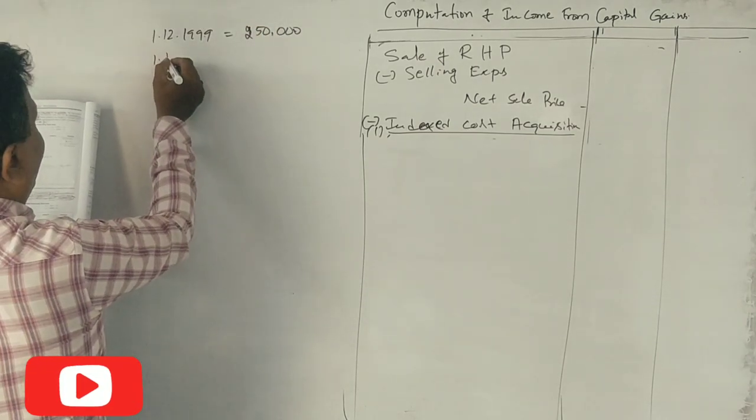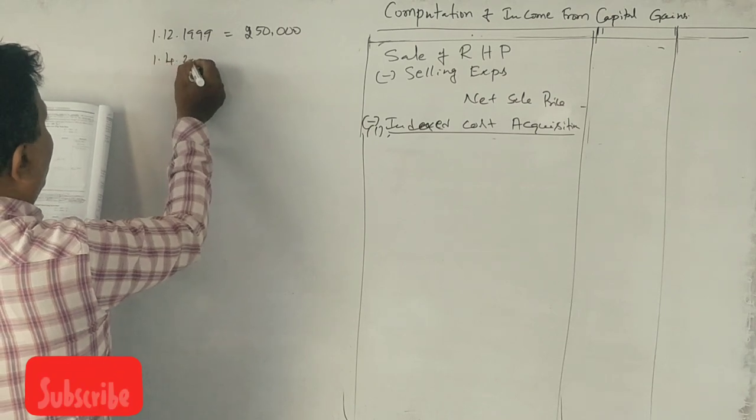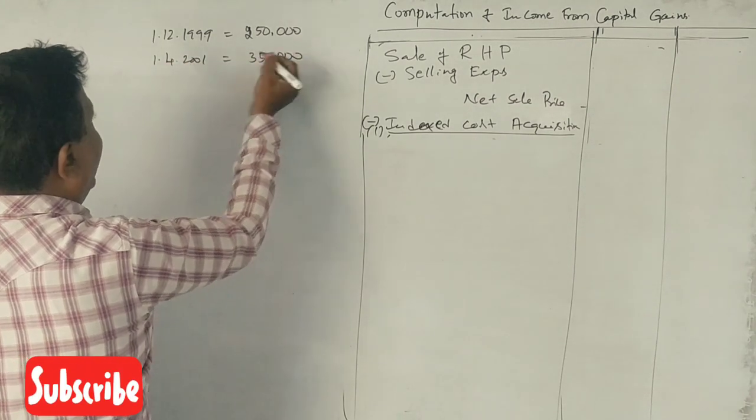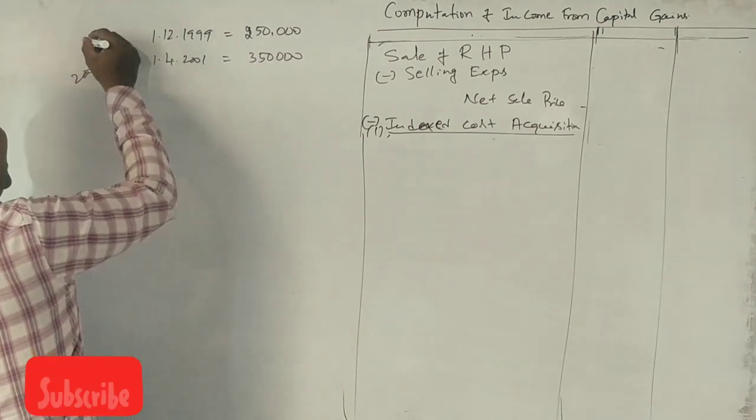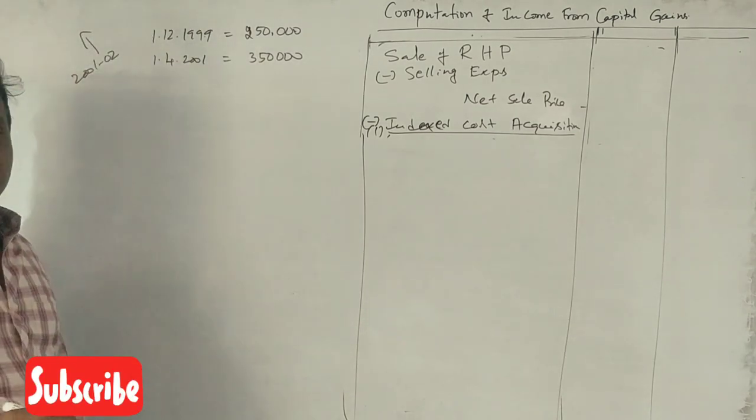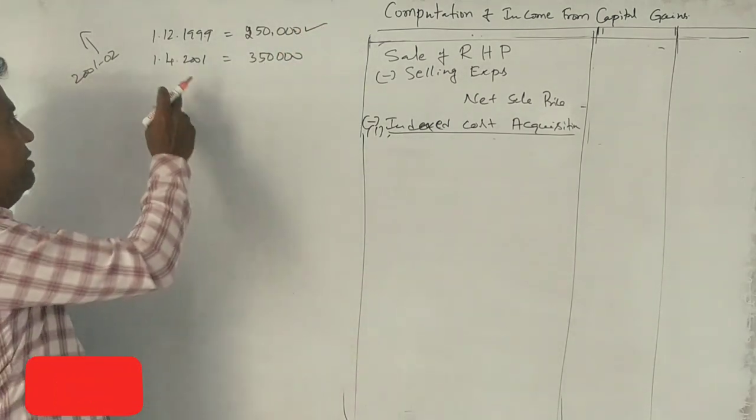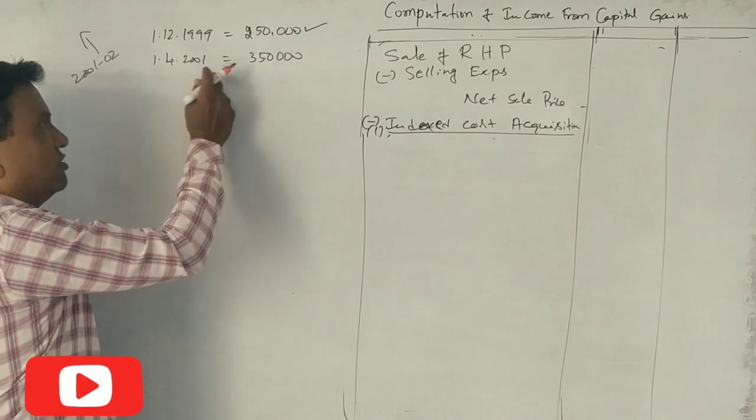Fair market value on 1-4-2001 is Rs. 3,50,000. We have index for 2001-02. For any purchase made before this date, we use the fair market value on 1-4-2001.